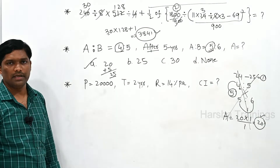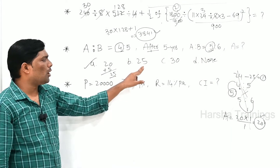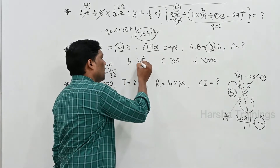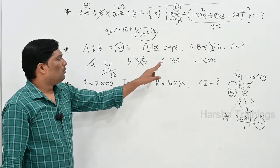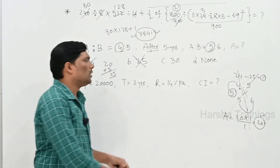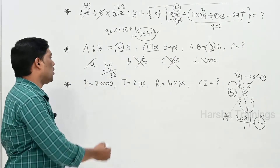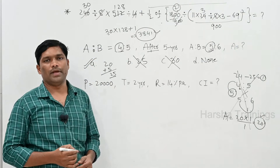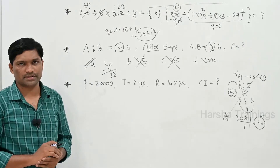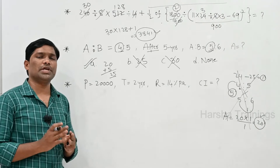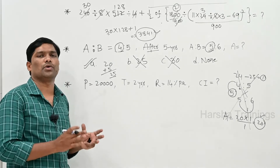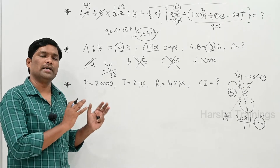Only option 1 is correct. So A's present age is 20 years, and after 5 years it will be 25 years. Whether you use the basic method, shortcut method, or option verification, you get the same answer in the end.